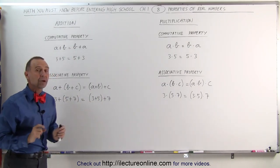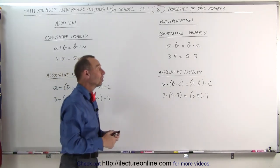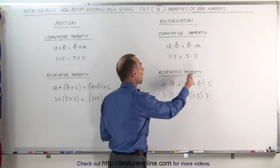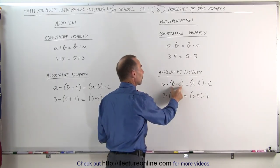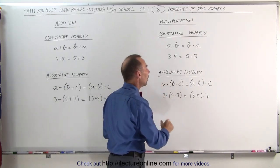That's what we mean by associative property. We can associate or group numbers together. As an example, 3 plus 5 plus 7 is the same as 3 plus 5 plus 7. It doesn't matter which we do first.